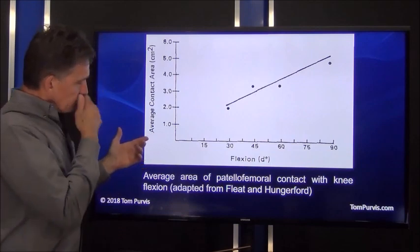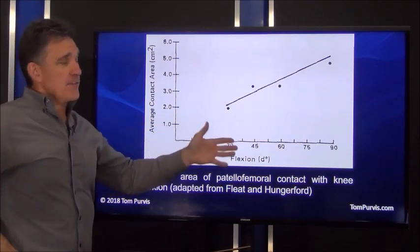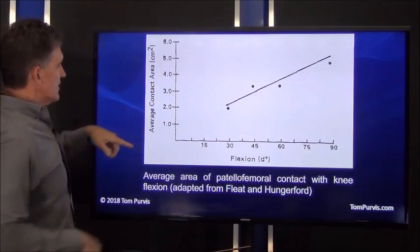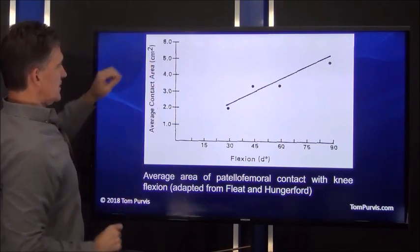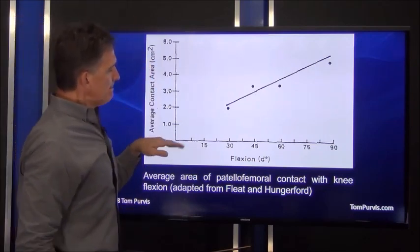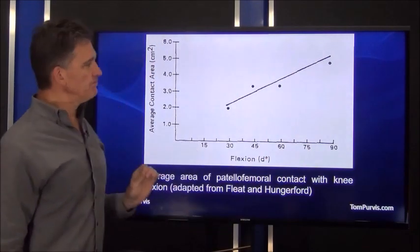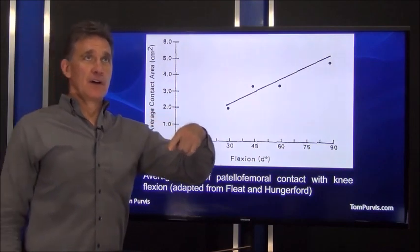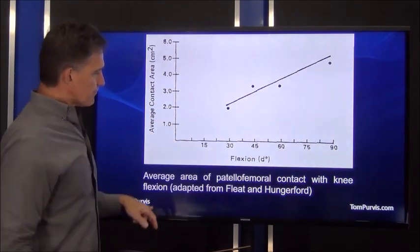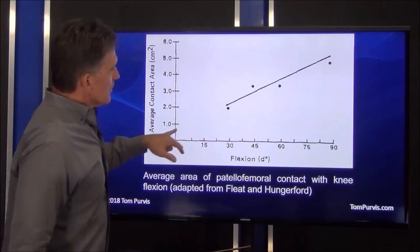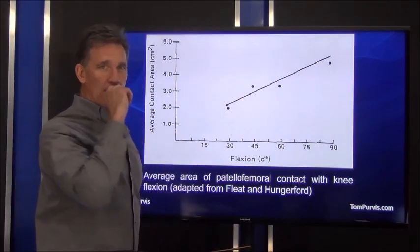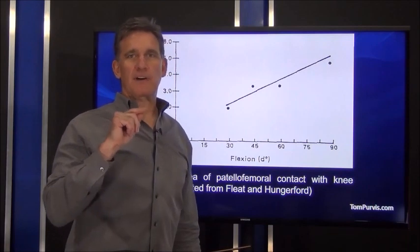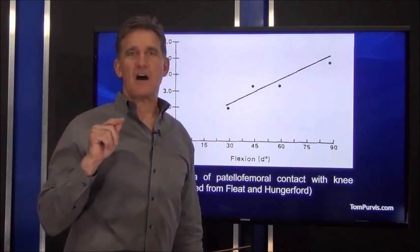Here is a graph of the things we just looked at. So along this side is average contact area in square centimeters, and here's degrees of flexion. Now it only goes up to 90 even though the research went on to 135. But what it shows, and again remember we've talked about that graphs really aren't lines. The original data is not a line.